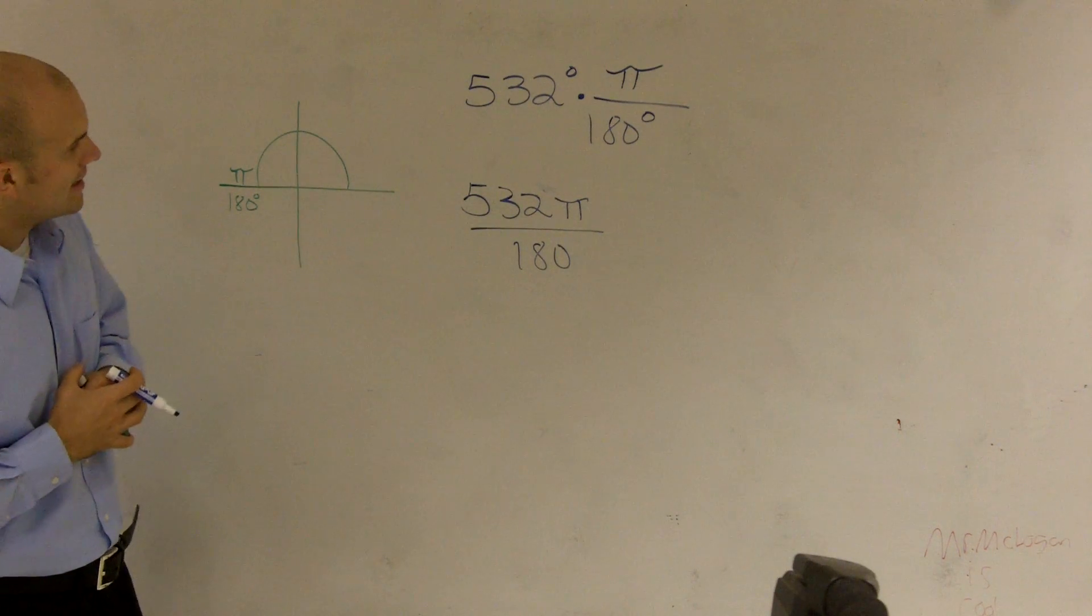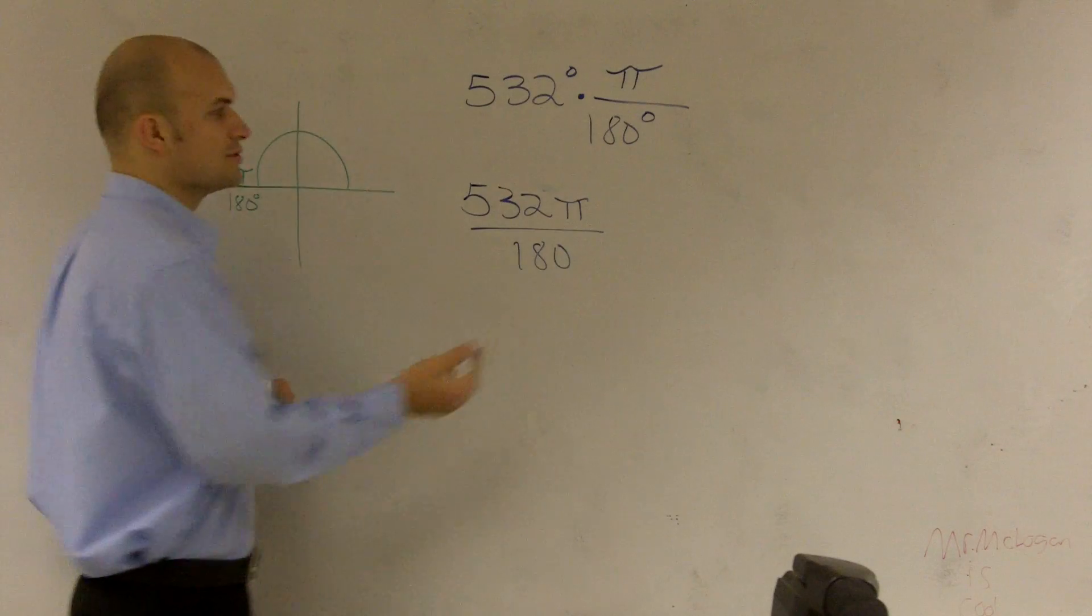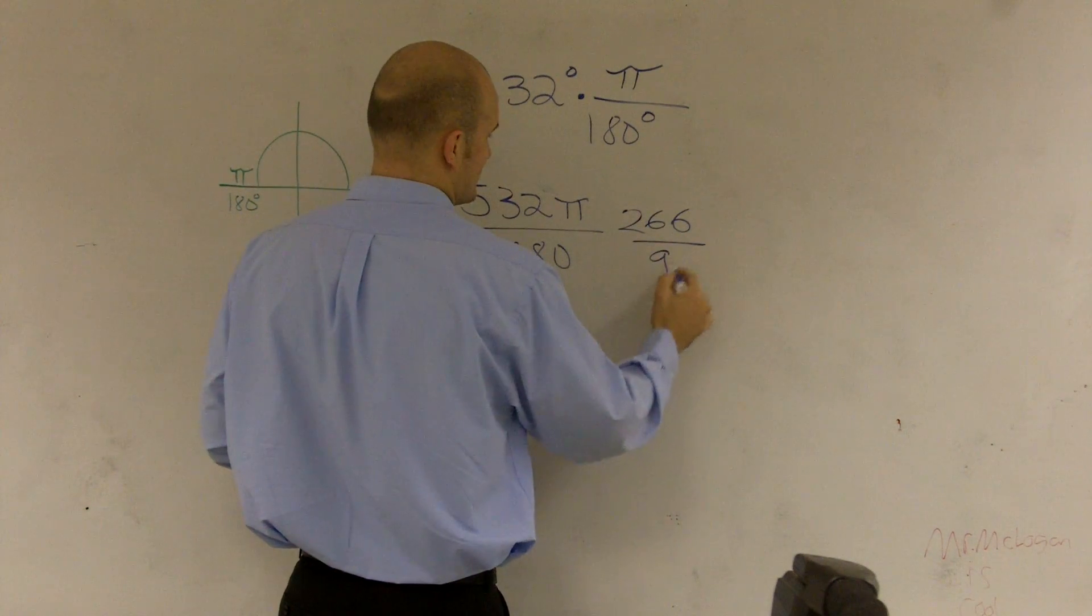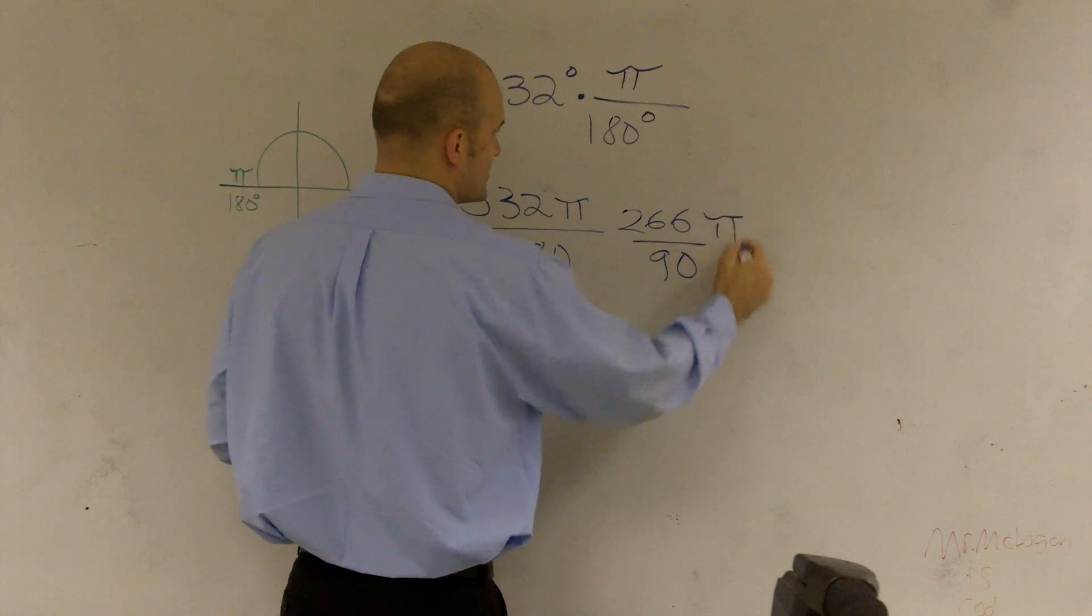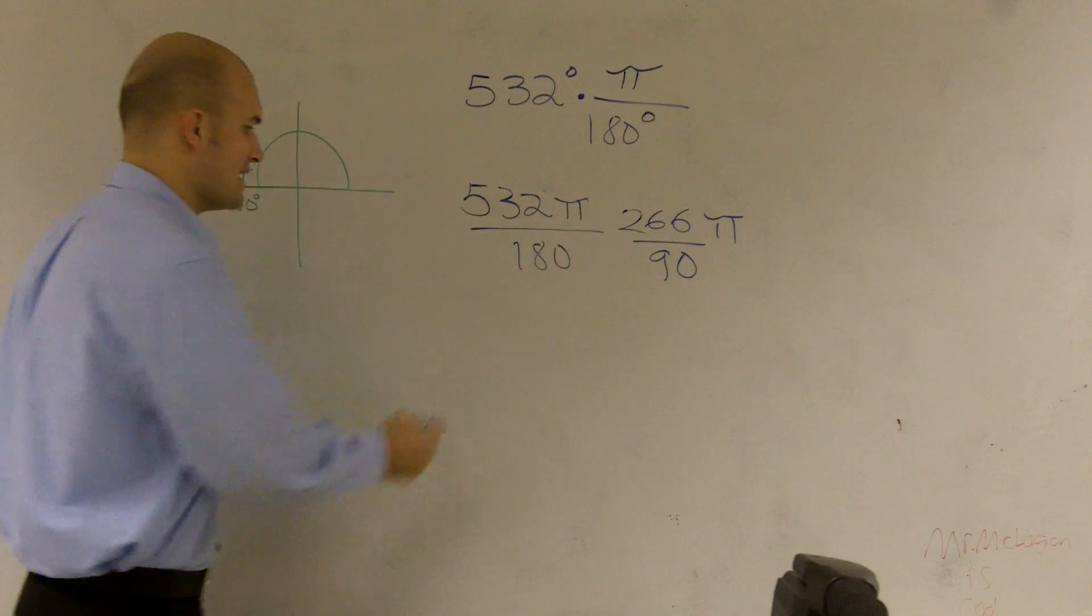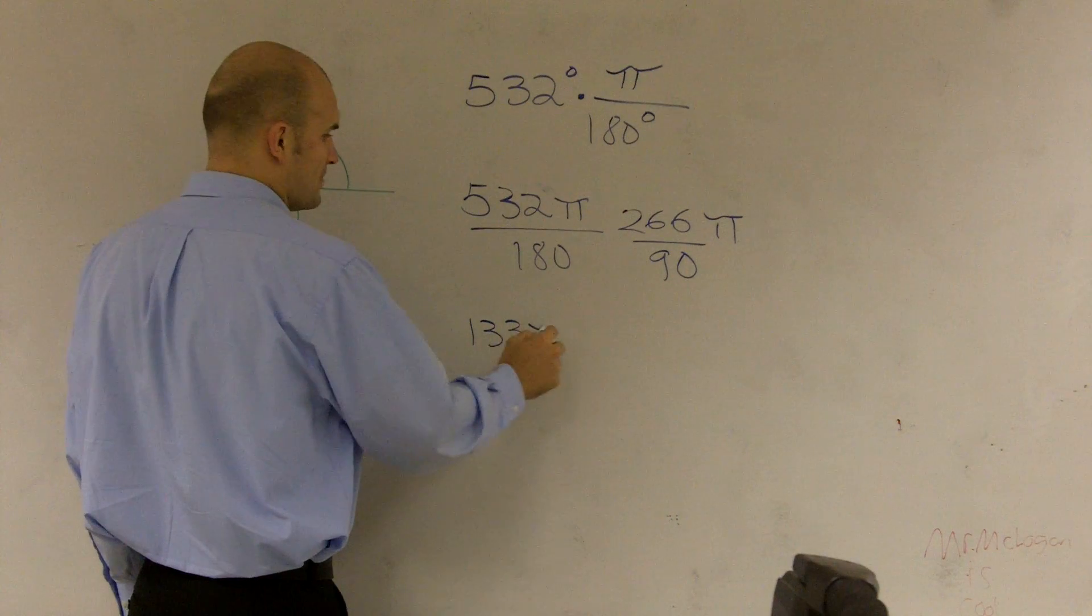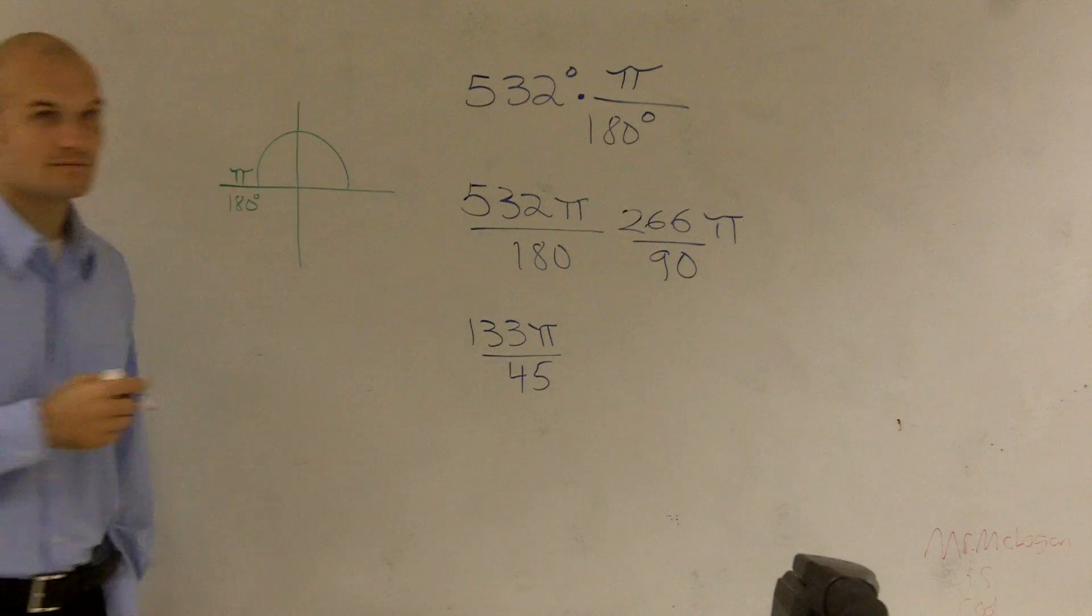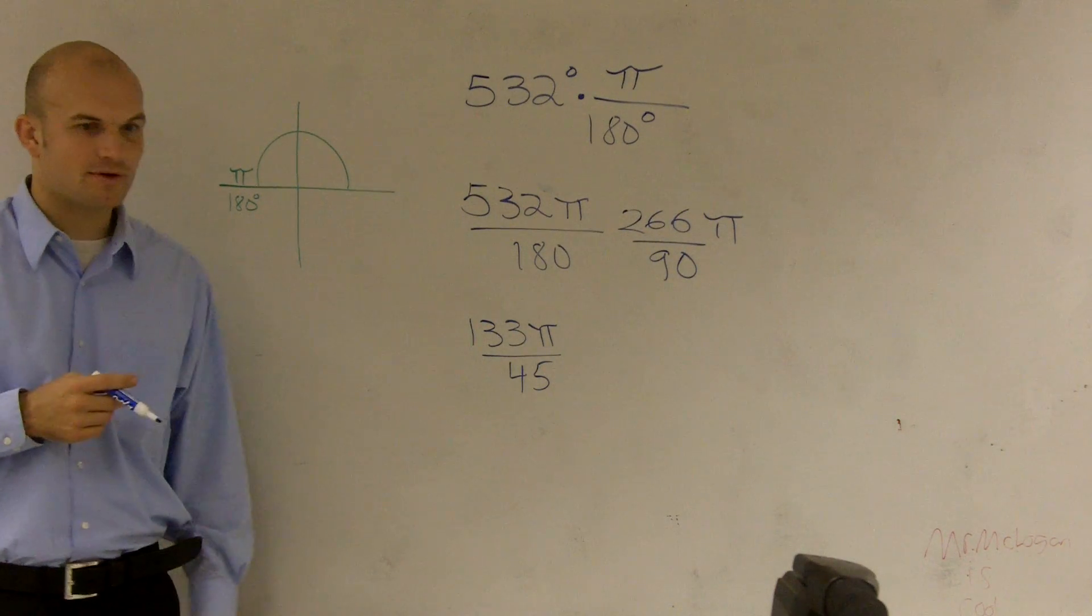So I look at this and I say, well, I can do 266 over 90, right, divide the top and bottom by 2. Then I can divide it by 2 again, 133 pi over 45, and then, can that be reduced anymore?